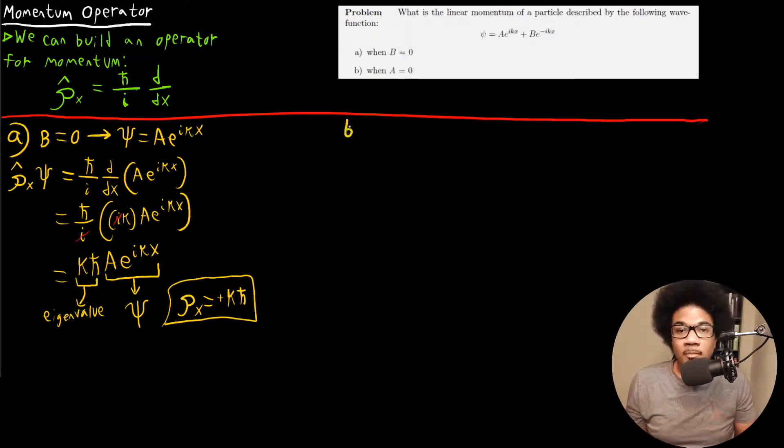Let's look at part B. Part B is asking us about the case where A is equal to zero. If A is equal to zero, then that means we're just left with the term with B in front. We have psi is equal to B e^(-ikx). In this case, again, we're going to apply the momentum operator to the wave function.